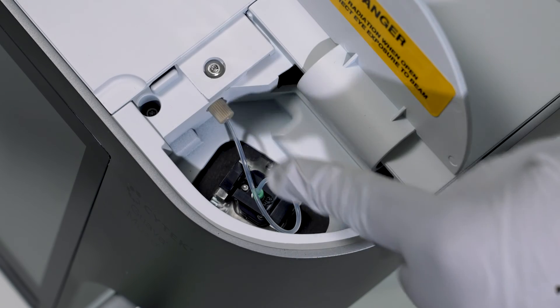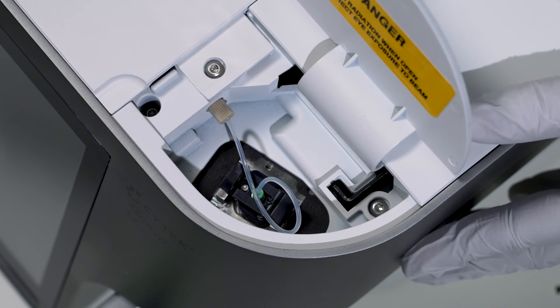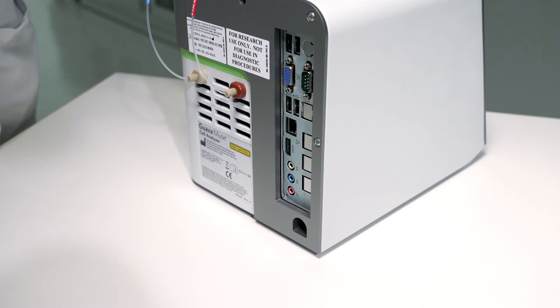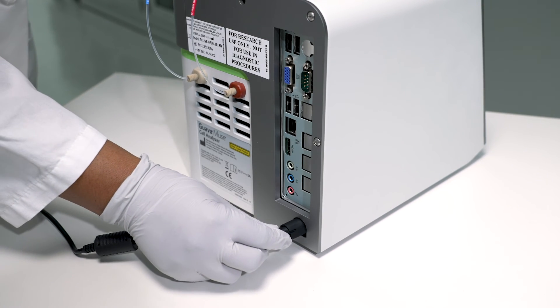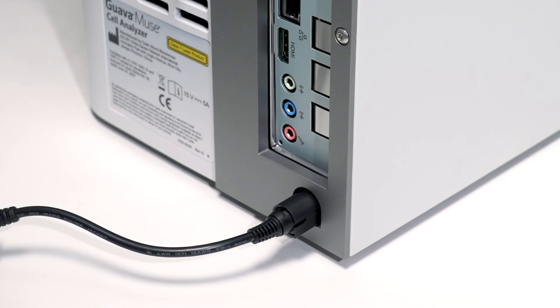Now the fluid bottles and flow cell are installed. You are ready to switch your instrument on. Connect the Muse to its power source by plugging the cord securely into the back socket.